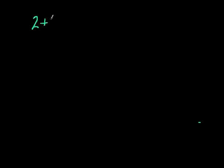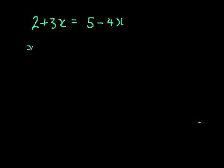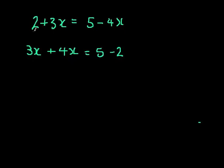Let's take another example: 2 plus 3x equals 5 minus 4x — there are two x's available. The same rule applies: get all the x's on one side and everything else on the other. Bring the minus 4x to the left side — it becomes plus 4x, giving 3x plus 4x on the left. Then take away 2 from both sides, giving 3x plus 4x equals 5 minus 2. Now we have all the x's on one side.